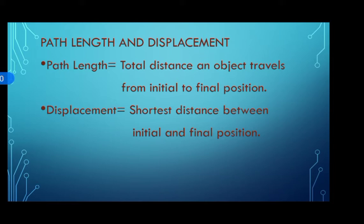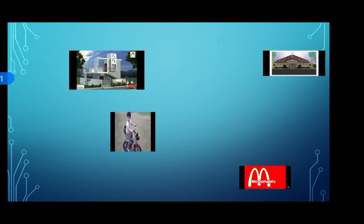So let us take this example to understand the difference between path length and displacement. Let us suppose a small boy riding a bicycle. Initially the boy is at rest. Now he starts moving — he goes from his house to the church, and then from the church he comes to McDonald's. So what was the total distance covered by this boy? When I say total distance, I mean the entire length of the path.